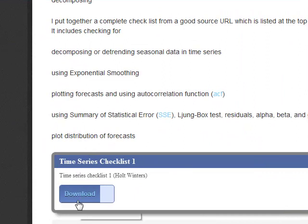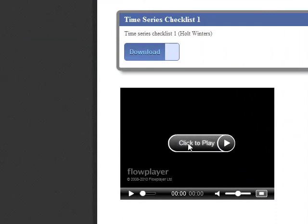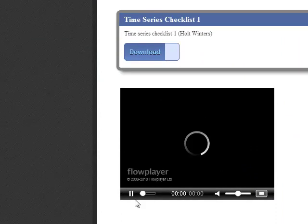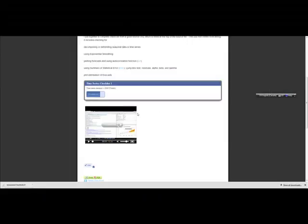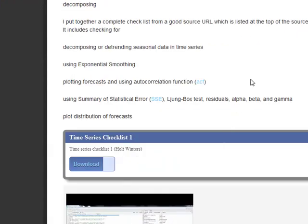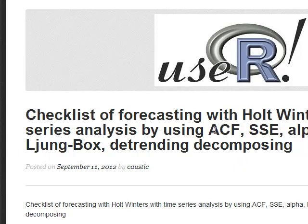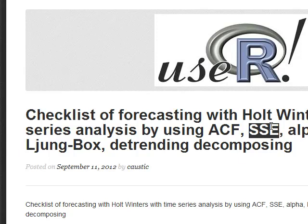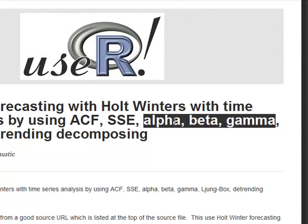What we generally have is an R file, because obviously I've moved into R, and it's associated with this posting, as well as a video. This cannot be found on YouTube anywhere. There's a full-screen mode so you can get better detail, and I have both postings available. What I cover in this video includes ACF for correlation, autocorrelation, SSE, some standard errors, alpha, beta, and gamma.